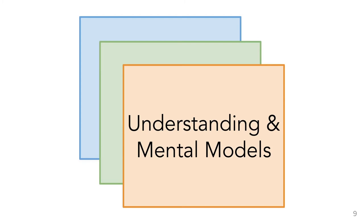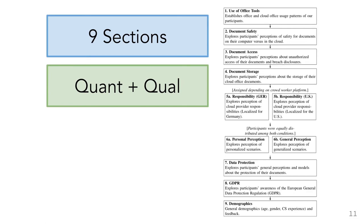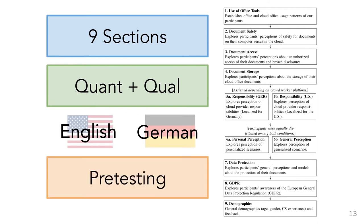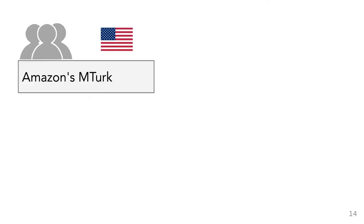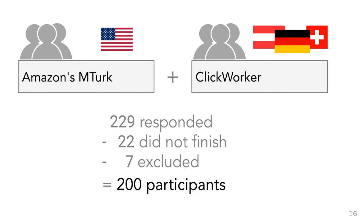For this, we developed a survey consisting of nine sections containing quantitative and some qualitative aspects. Our survey had two versions: one in English with a US focus and a German-speaking version. We pre-tested our survey with native speakers in both English and German and ran a number of pre-surveys with a total of 29 participants. We conducted our surveys on Amazon's Mechanical Turk and Clickworker, the equivalent for German-speaking countries. After filtering, we had 200 final participants — 105 from MTurk and 95 from Clickworker.